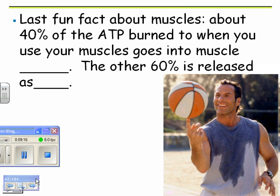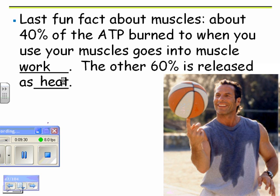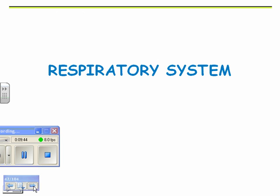The last fun fact about muscle cells: about 40% of your energy that you burn is useful and goes into making ATP or making you work. The other 60% is released as heat. The idea I want you to get is that some of your energy goes into work, but a lot of your energy is just released as heat. So if you're running around moving your body, a lot of it's going to go into heat. And that's the end of the lesson.